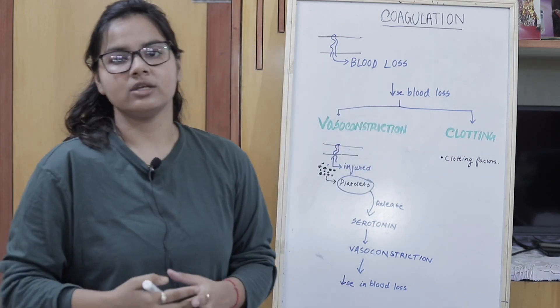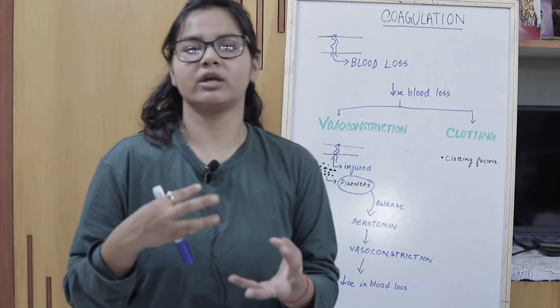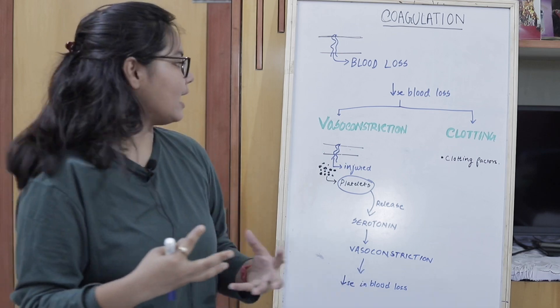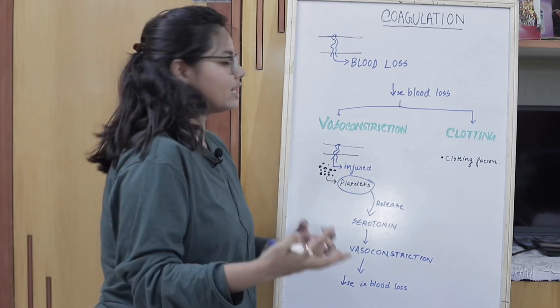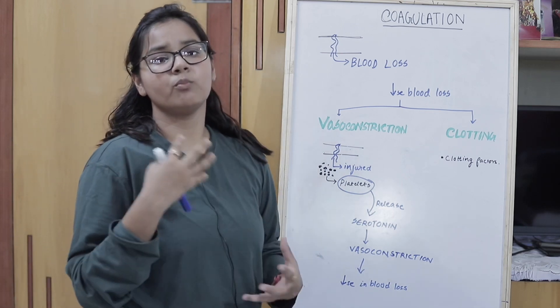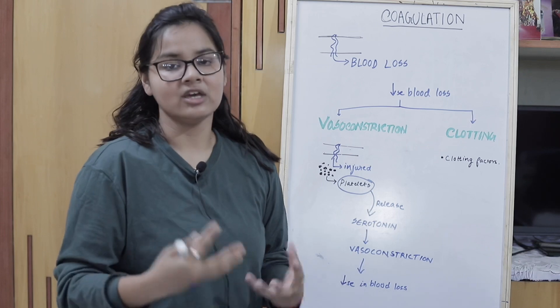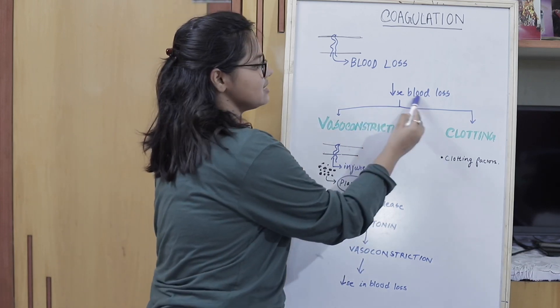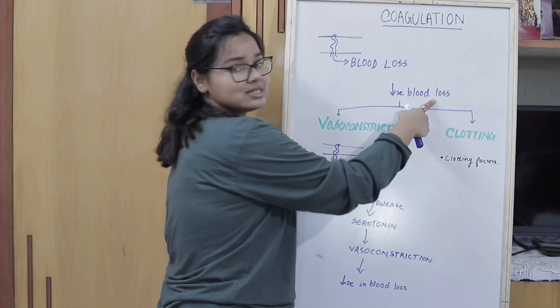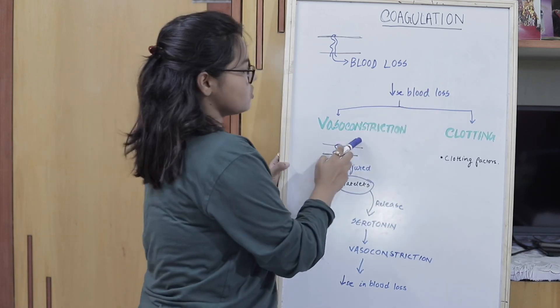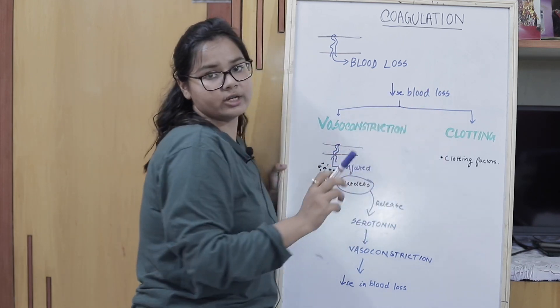When there is blood loss, the blood volume will continuously decrease. What we need at that time is a body mechanism to decrease the blood loss. Our body has two mechanisms to decrease blood loss: one is vasoconstriction and the other is clotting.